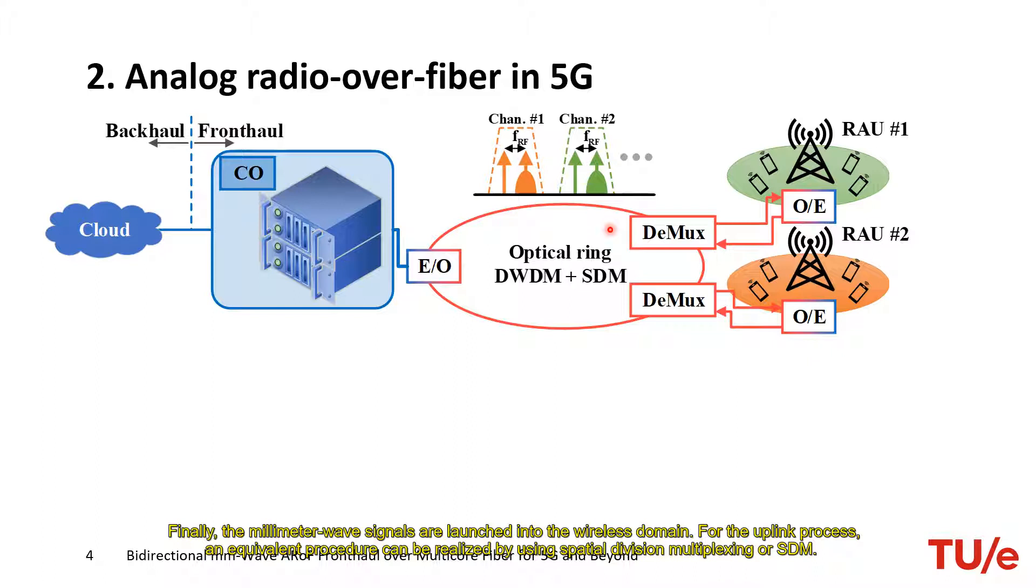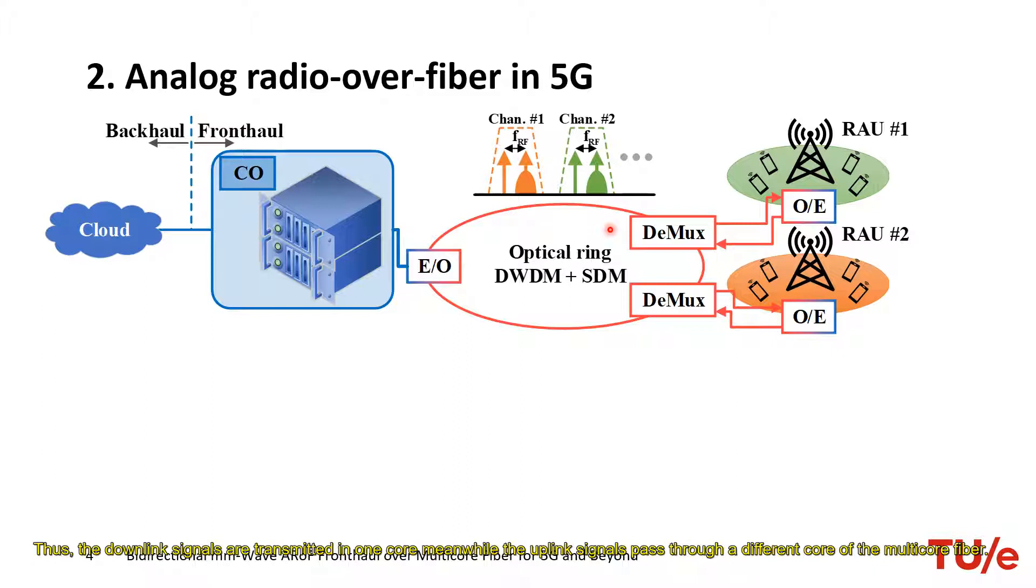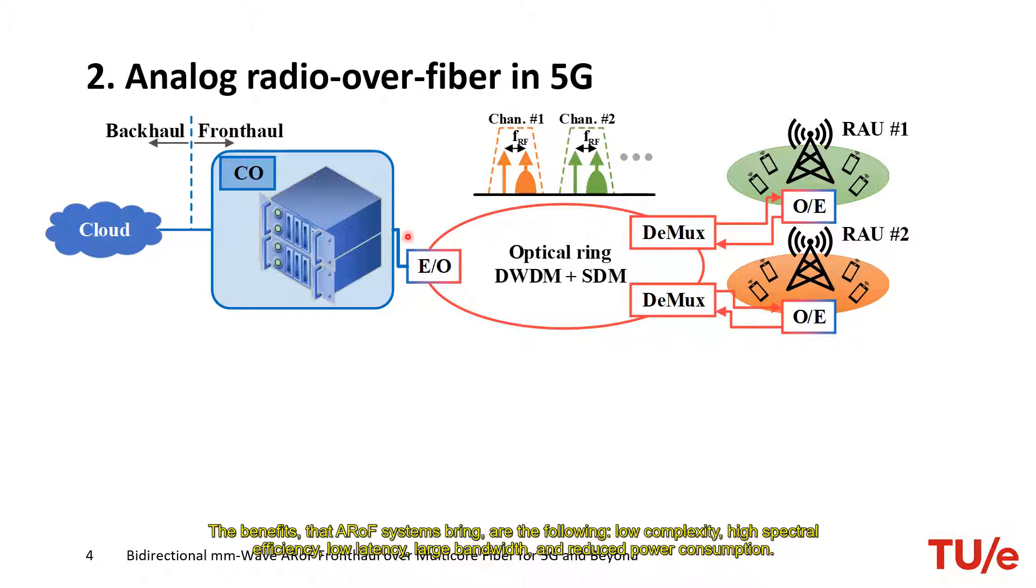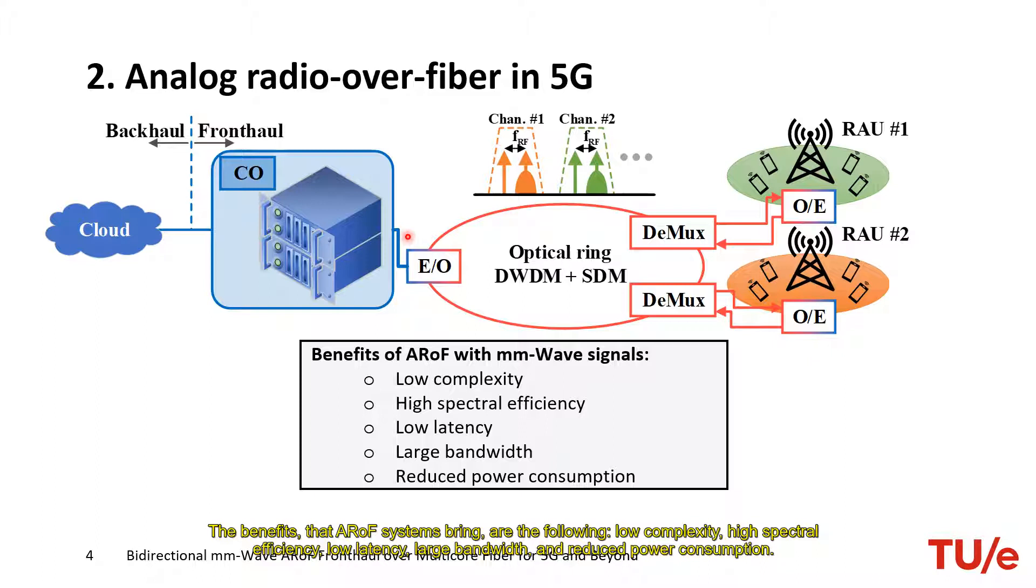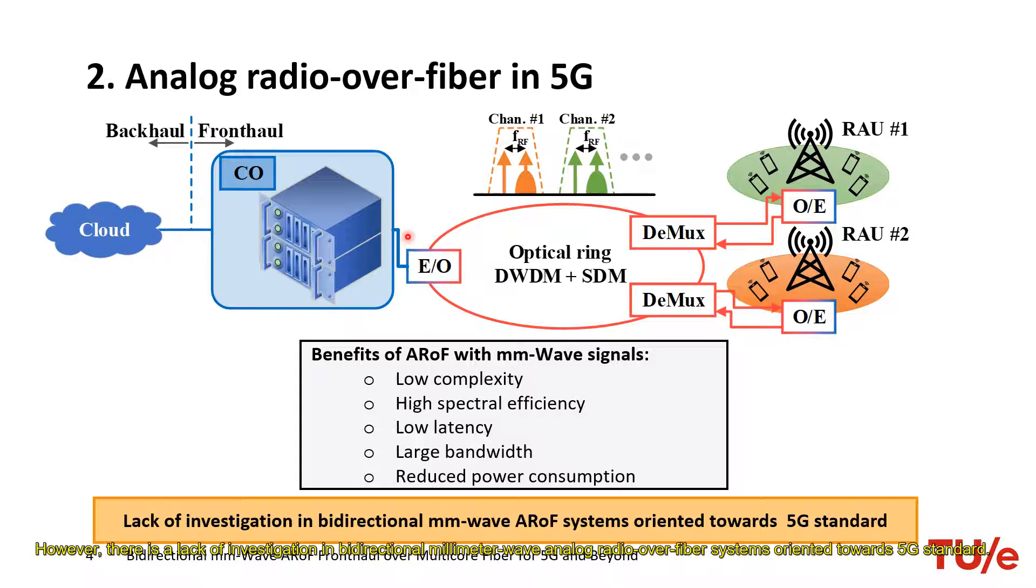In this work, multicore fiber is the chosen SDM technology. Thus, the downlink signals are transmitted in one core meanwhile the uplink signals pass through a different core of the multicore fiber. In this way, an efficient bidirectional RoF system is realized. The benefits that an RoF system brings are the following: low complexity, high spectral efficiency, low latency, large bandwidth, and reduced power consumption. However, there is a lack of investigation in bidirectional millimeter wave analog over fiber systems oriented towards 5G standard. Therefore, this work aims to cover this research field.